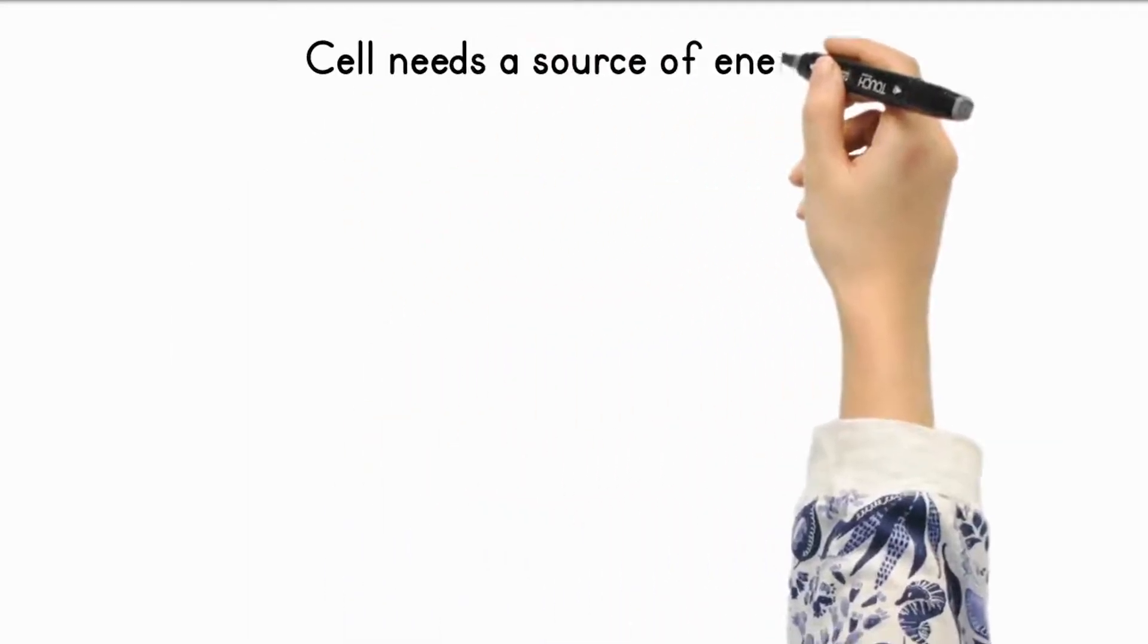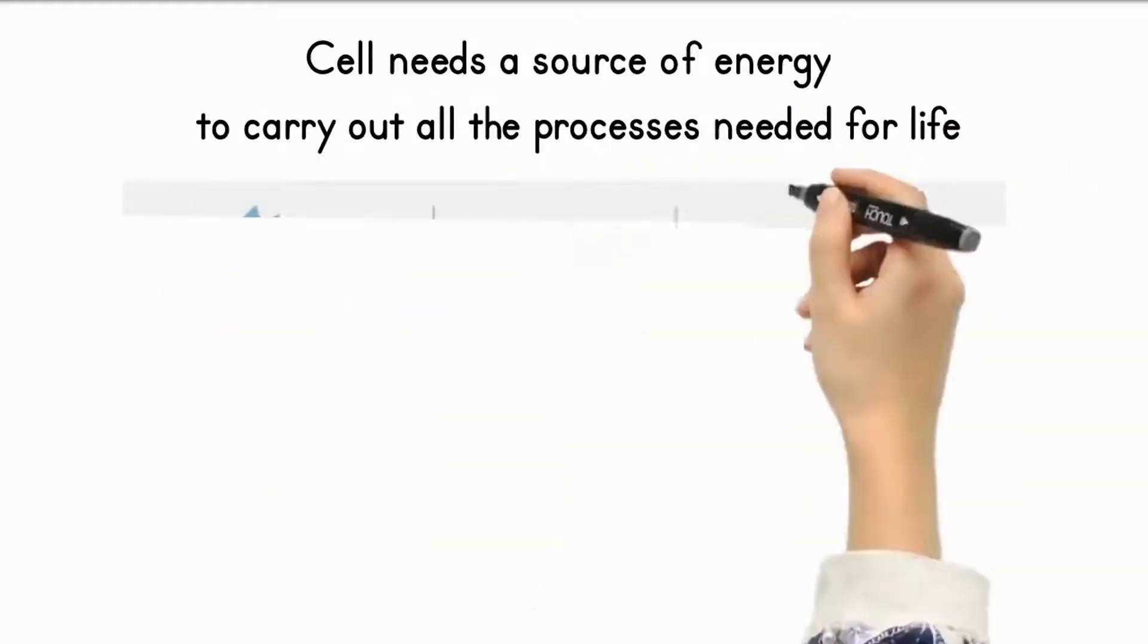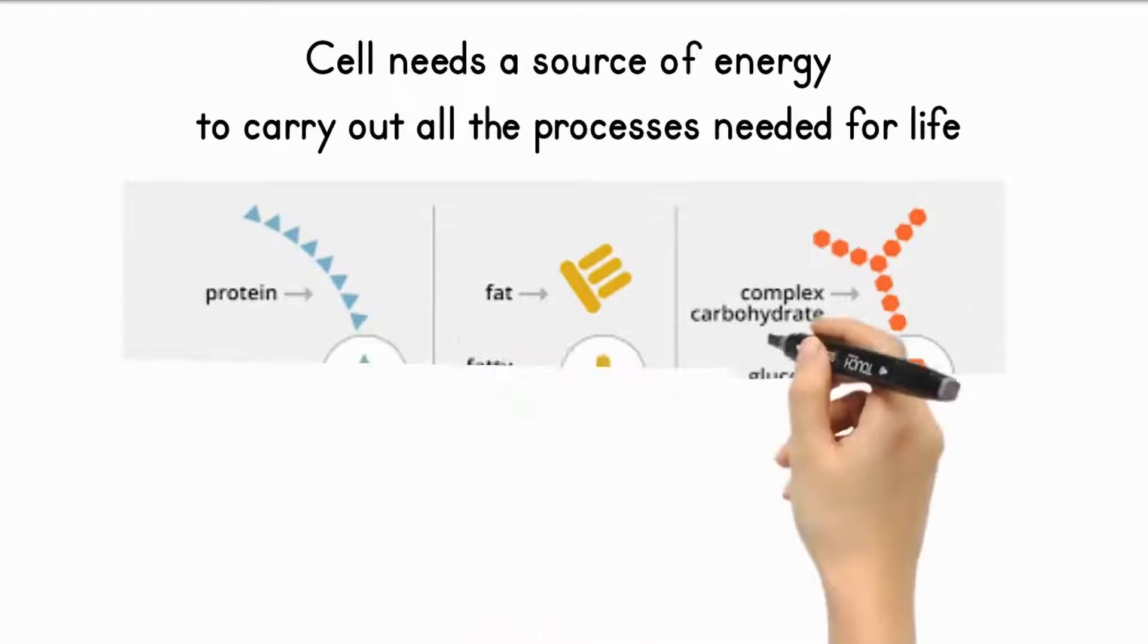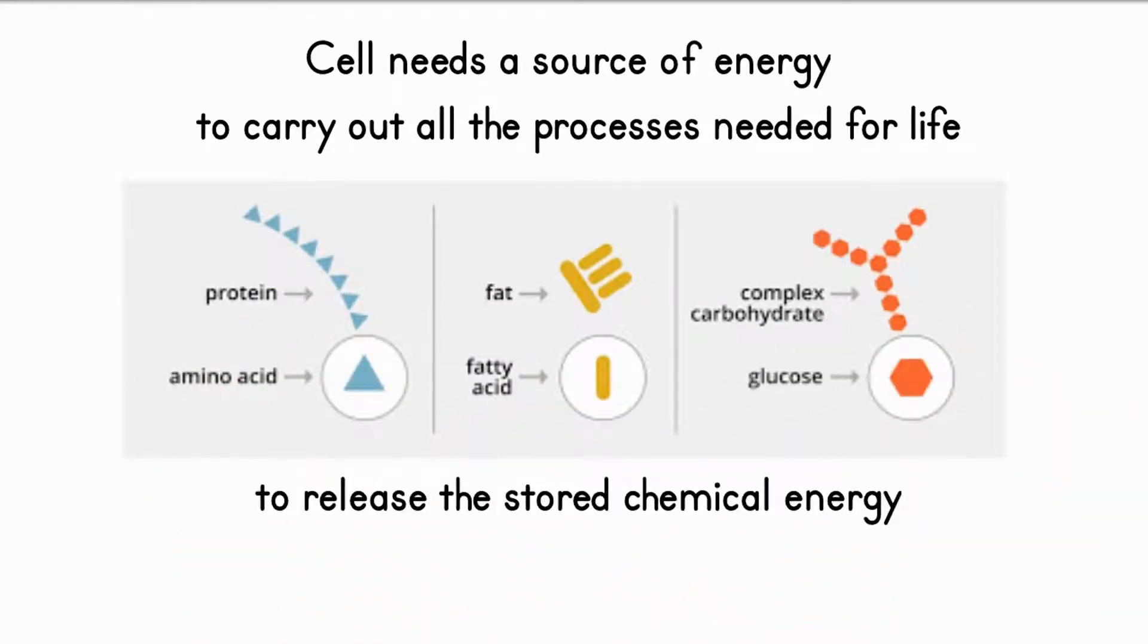A cell needs a source of energy in order to be able to carry out all the processes needed for life. It gets this energy by breaking down food molecules to release the stored chemical energy that they contain. This process is called respiration.